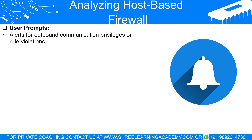Whenever an application tries to make a network connection that isn't covered by the firewall's existing rules, the firewall can prompt the user for permission. It's like when a visitor at your door asks to come in and you decide whether to let them based on who they are and why they're there. For example, if a program that never needed internet access before suddenly tries to connect, the firewall can alert you, and you can then decide whether this is legitimate or suspicious.